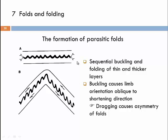If contraction carries on and gets more intense, then the whole sequence might undergo buckling — buckle fold formation. This converts our primarily first-order fold into a second-order fold, and the whole sequence would form the larger fold, which would then be the new first-order fold.